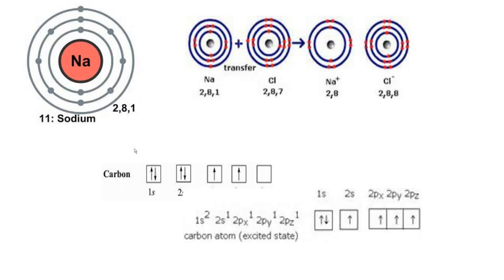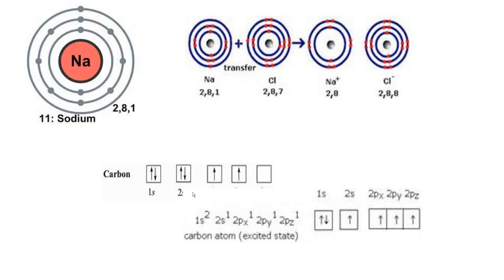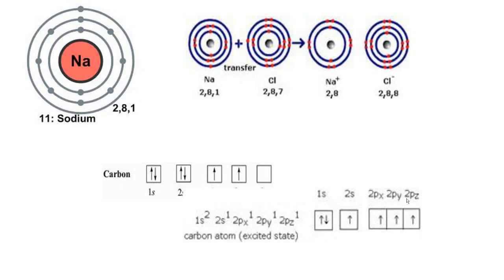On the other hand, this is carbon in the ground state and this is carbon in the excited state. This is 2S, 2PX, 2PY, and 2PZ, just like here you can see. One electron from the 2S orbital jumps into the 2PZ orbital, forming 4 unpaired electrons. These get paired with 4 chlorine atoms and form the CCl4 compound, which is a covalent compound.